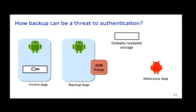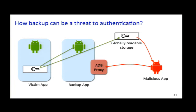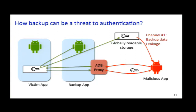Let's think about how this backup channel can be a threat to authentication protocols. First, if the backup application locates an authenticator belonging to the victim application into some globally readable storage, then a malicious app can just read it to get the authenticator. Second, if the ADB proxy is not controlled or protected, some malicious app can also invoke the proxy to do the backup and get the authenticator. We call the first case 'backup data leakage' and the second 'backup capability leakage.'